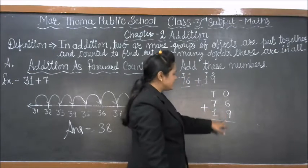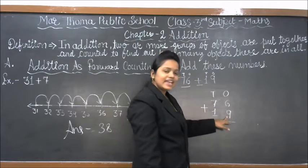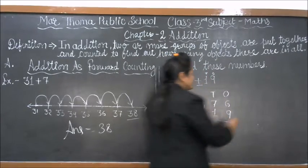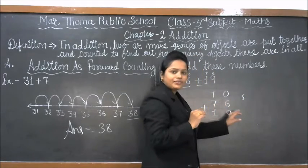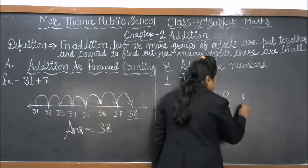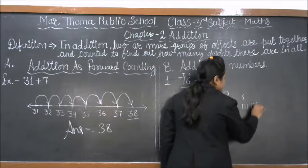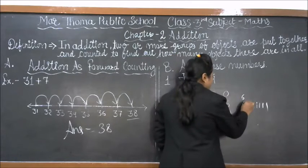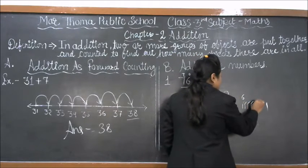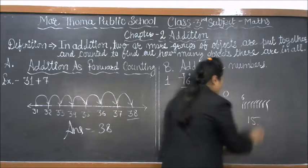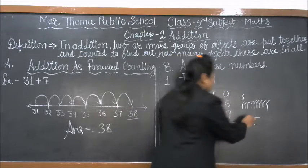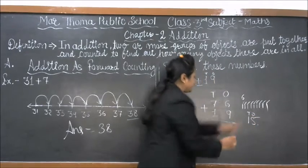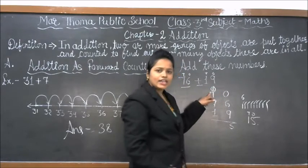So we have to count: 6 plus 9. Keep 6 in our mind and draw 9 lines: 1, 2, 3, 4, 5, 6, 7, 8, 9. Counting on from 6: 7, 8, 9, 10, 11, 12, 13, 14, 15. So the answer is 15. We write 5 in the ones place, and 1 is carry over.